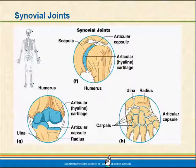Some examples of synovial joints are found in the knee, the shoulder, and the hand. Pretty much any movement you can make occurs around a synovial joint — movement of your fingers, your wrist, your arm — that's all the product of synovial joints.